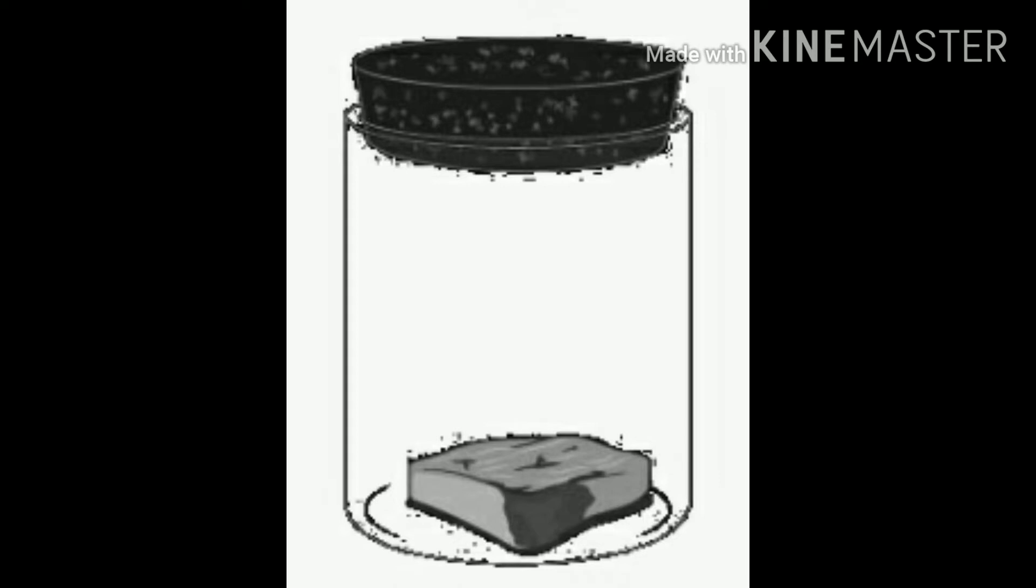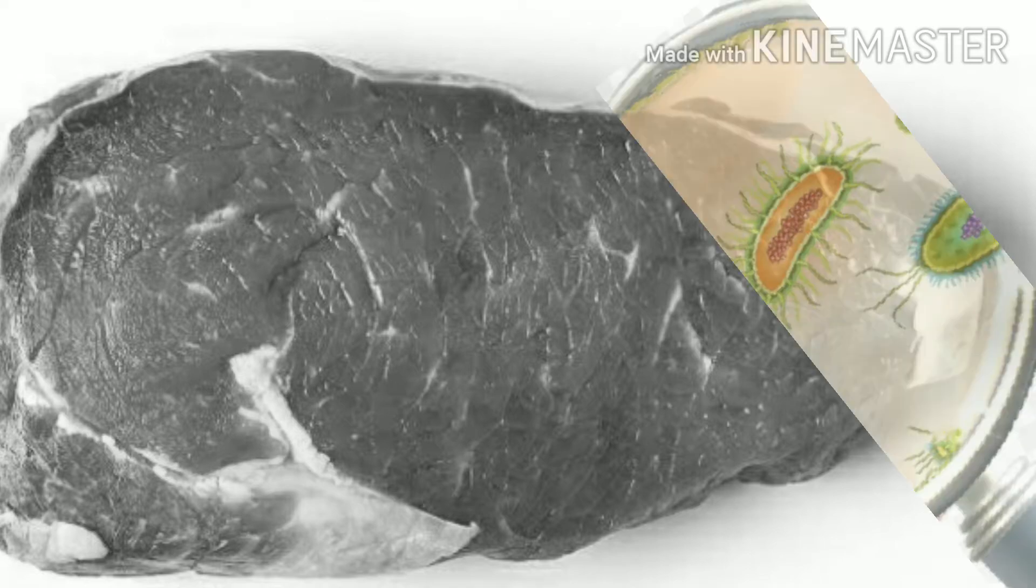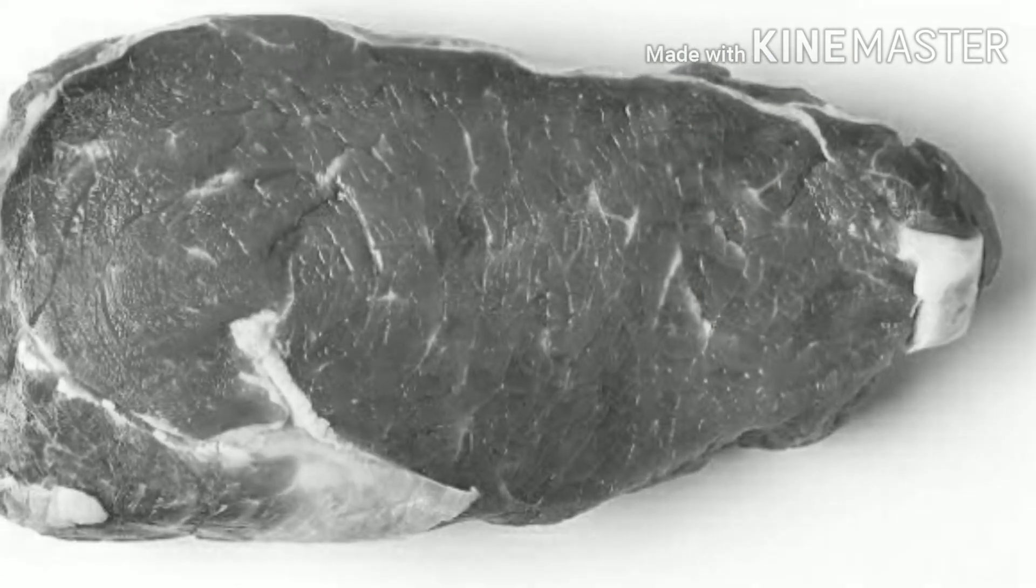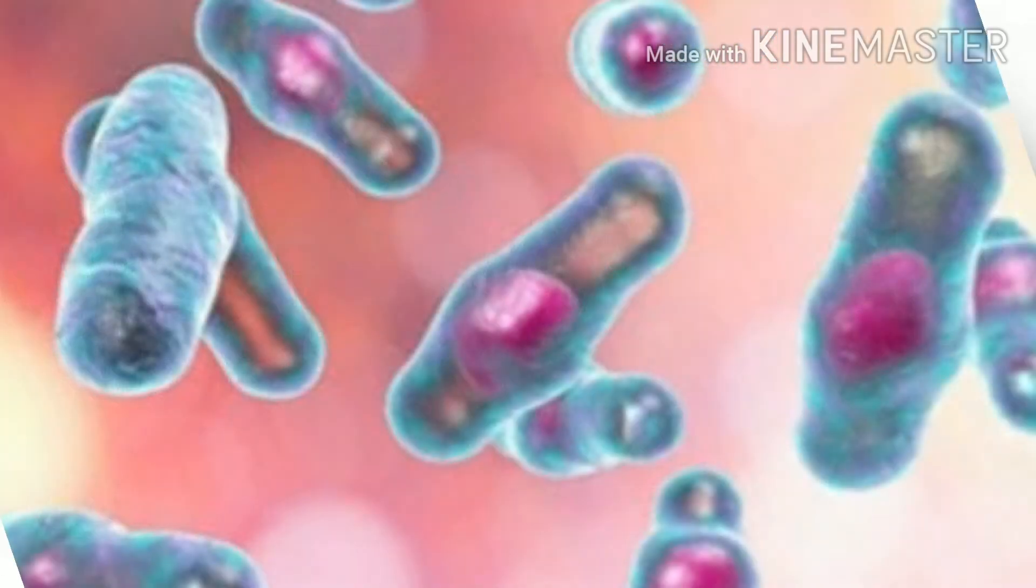After a few days, John Needham observed the appearance of organisms not present at the start of the experiment and concluded that the bacteria originated from the meat. In reality, however, he likely did not kill all pre-existing microbes.